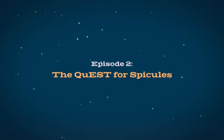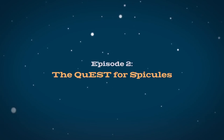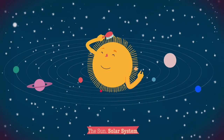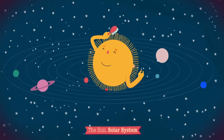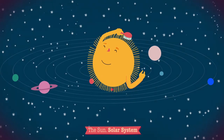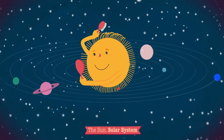Folge 2 – Spikulen auf der Spur. Die Oberfläche der Sonne ist von Strukturen überzogen, die wie Nadeln oder Haare aussehen. Sie werden Spikulen genannt.